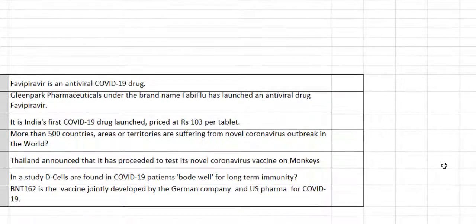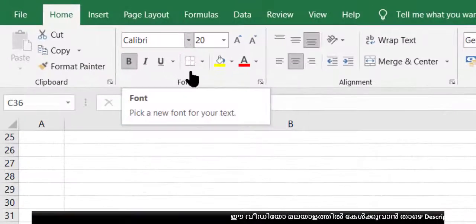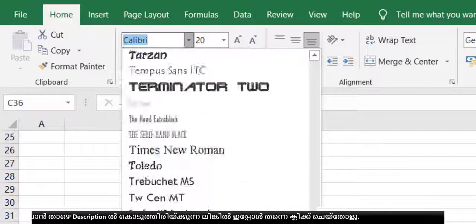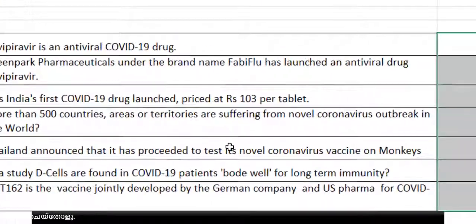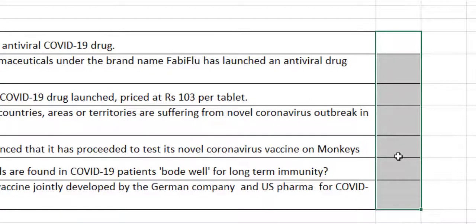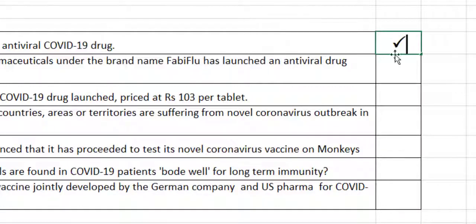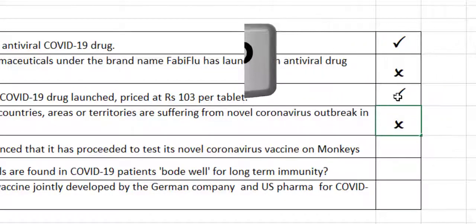How to do this in Excel — this is the shortcut I will show you. I have given the same questions and in this column we have to type a tick and a cross. Select those cells, then first you have to change the font. Click in the font box, go down and you can see Wingdings 2. Select Wingdings 2 font. Now for the first cell you need a tick — press Shift+P, and a tick mark appears. Shift+O gives a cross marker.